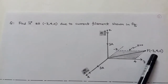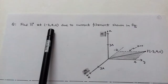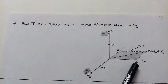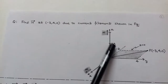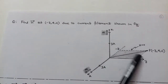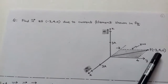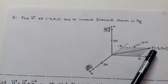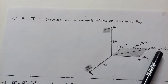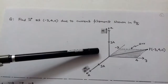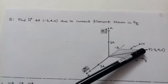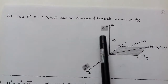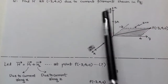First, we place point P, that is (-3, 4, 0), on the given figure. Here the x-coordinate is minus 3, the y-coordinate is 4, and z is 0. Z equals 0 means this point is situated on the xy-plane where x equals minus 3 and y equals 4. Due to this infinite current filament, we have to determine the magnetic intensity H at point P. Since this infinite current filament is situated on both x-axis and z-axis, that is from z to x.